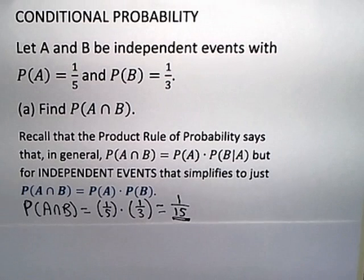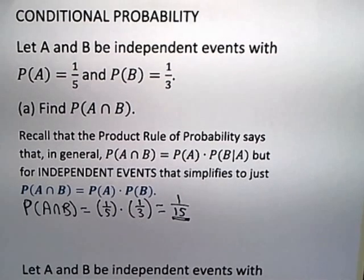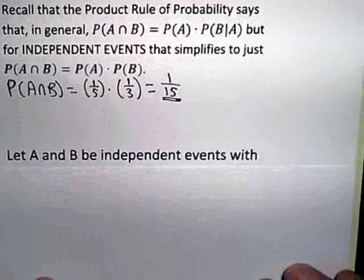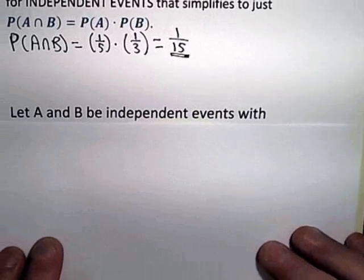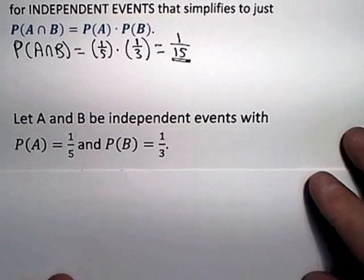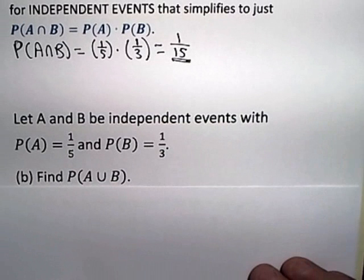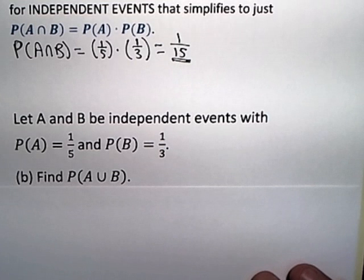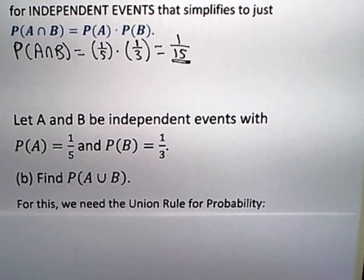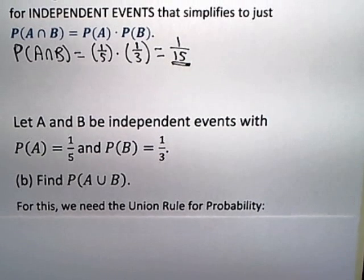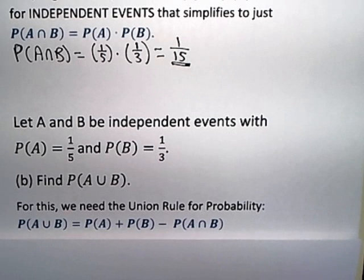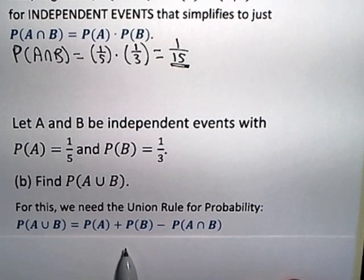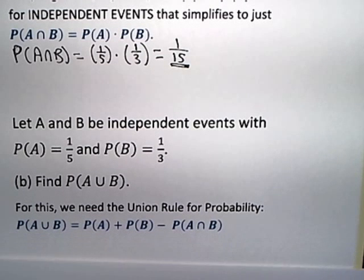Now there is the second part of this problem. The second part, with the same conditions, asks us to find the probability of A union B. In order to do this, you have to remember the union rule for probability, which says the probability of A union B is the probability of A plus the probability of B minus the probability of A intersect B.